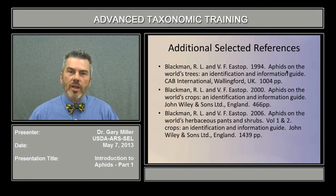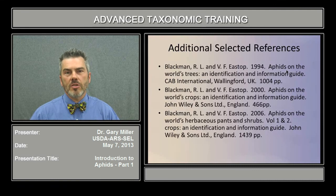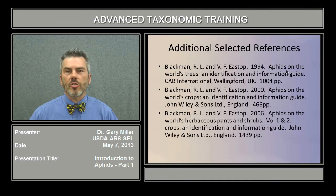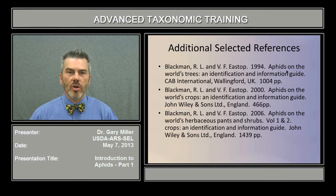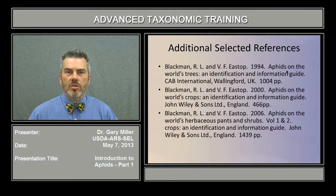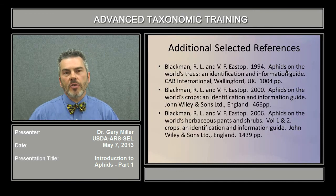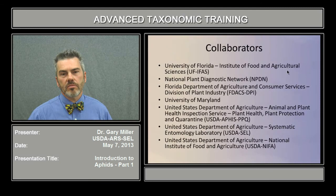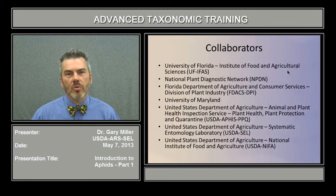Probably the gold standard for aphid identification is found in these selected references, a more traditional approach — the publications of Blackman and Eastop's books on aphids on the world's crops, aphids on the world's trees, and aphids on the world's herbaceous plants and shrubs. As mentioned previously, these books require the use of host information, so if you have your host information, you can make an identification of an aphid on that particular host. This project would not be possible without the collaboration of the institutions listed on this slide.